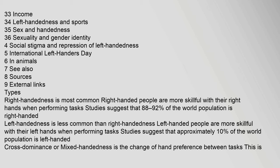Right-handedness is most common. Right-handed people are more skillful with their right hands when performing tasks. Studies suggest that 88–92% of the world population is right-handed. Left-handedness is less common than right-handedness; left-handed people are more skillful with their left hands when performing tasks. Studies suggest that approximately 10% of the world population is left-handed.